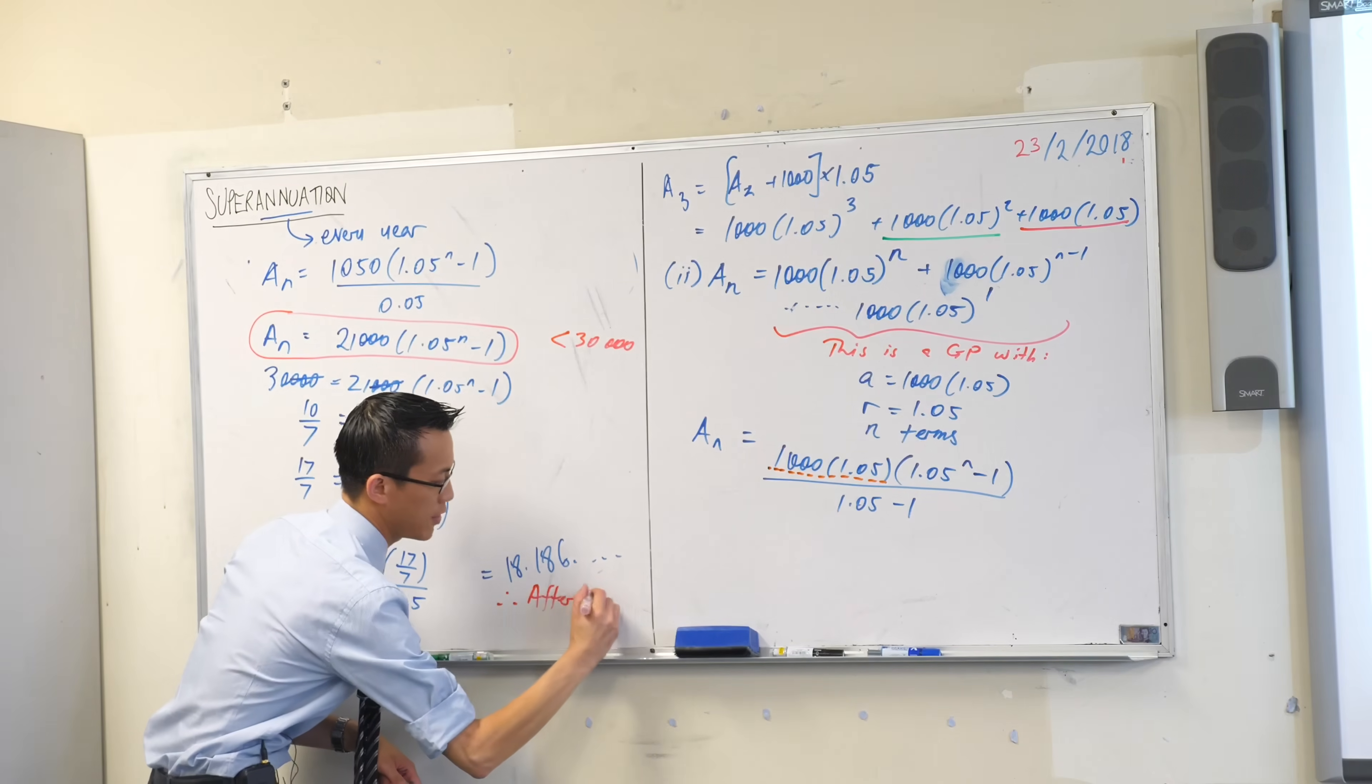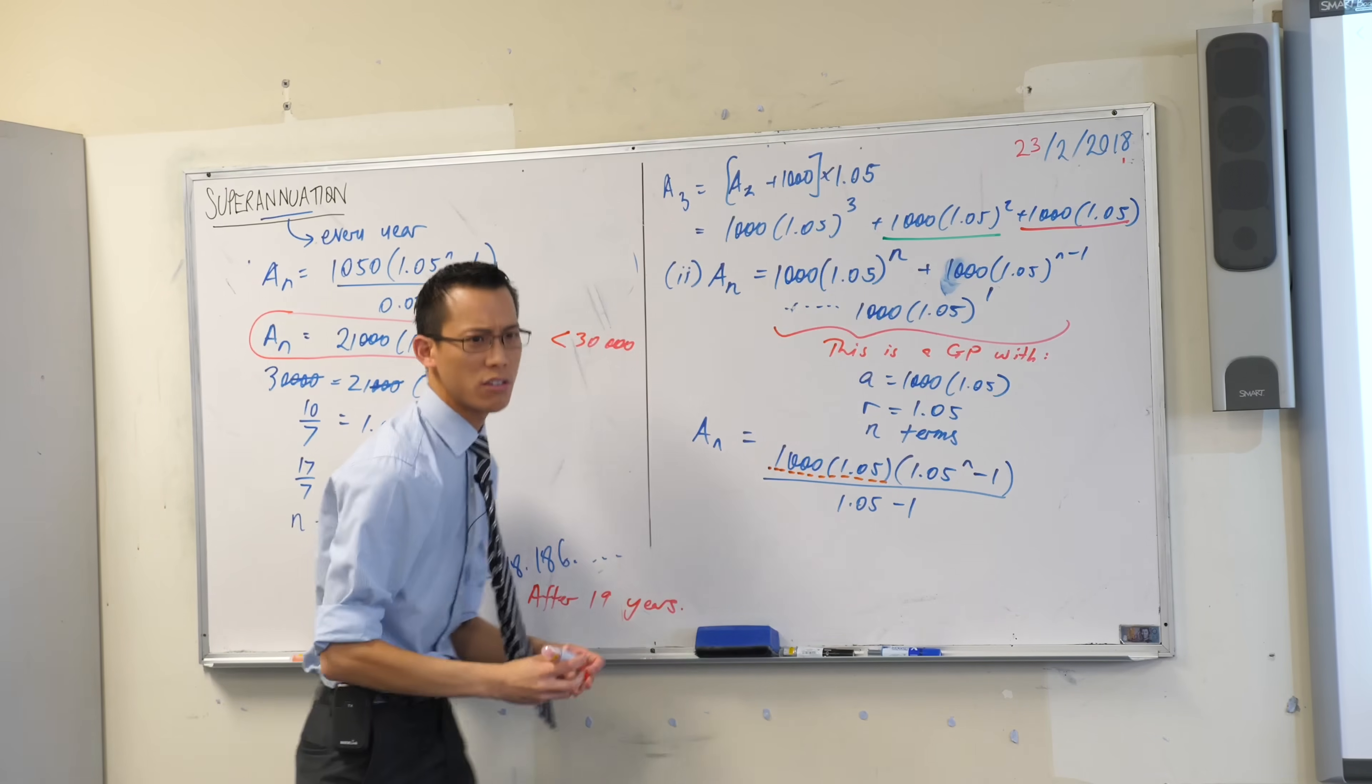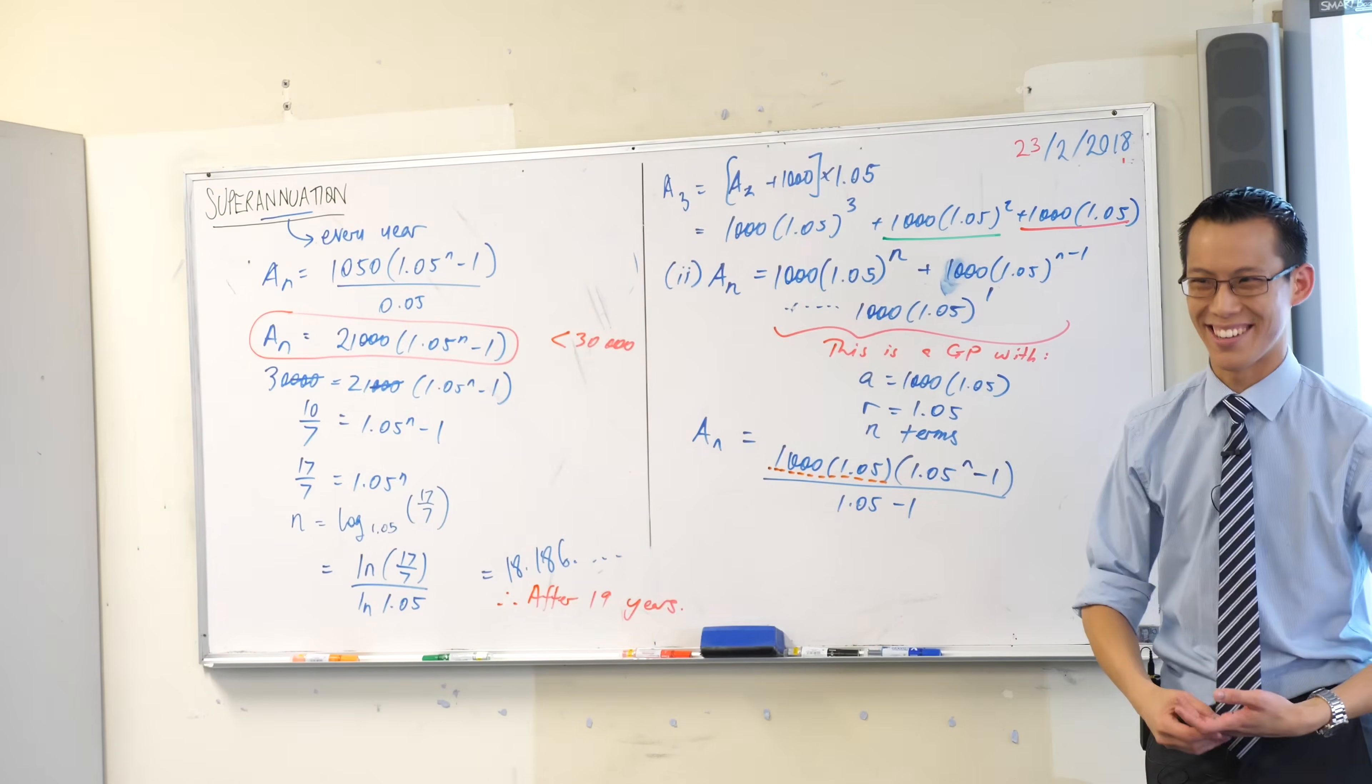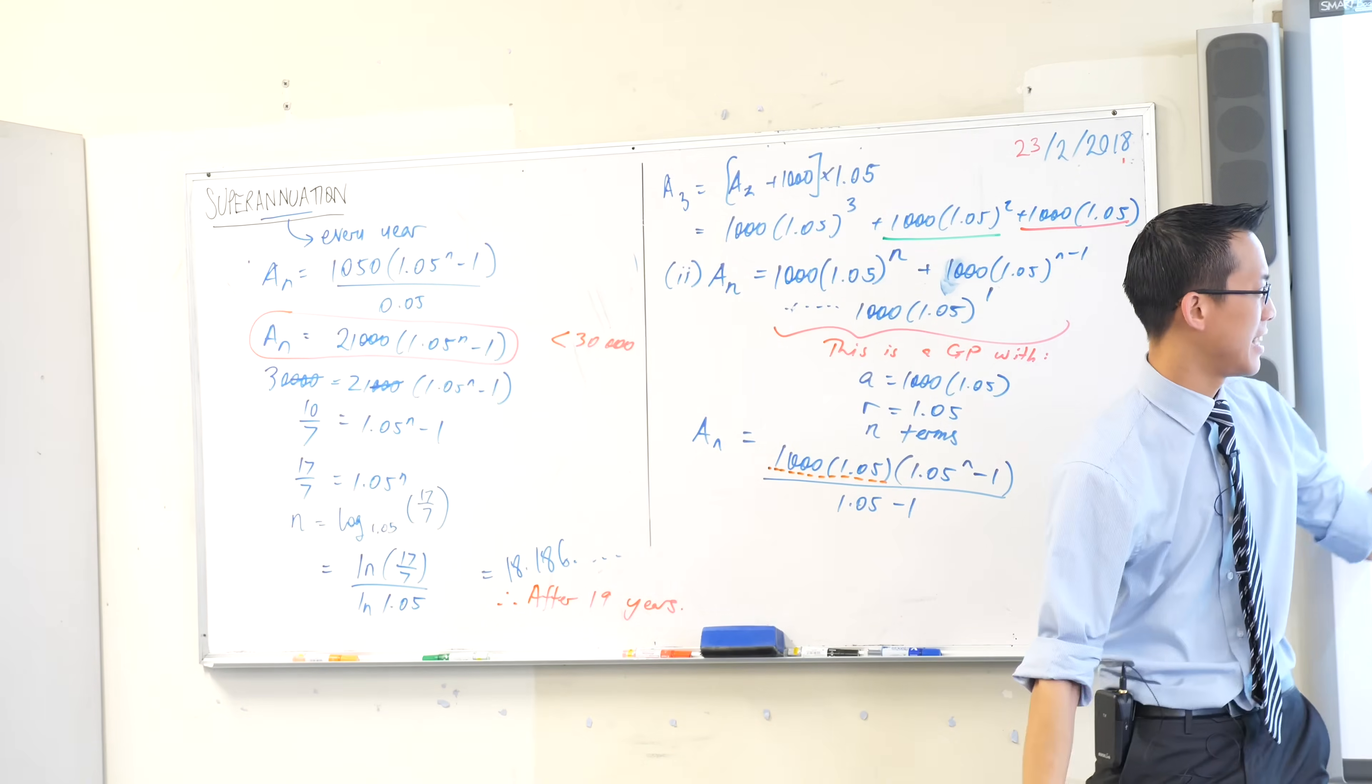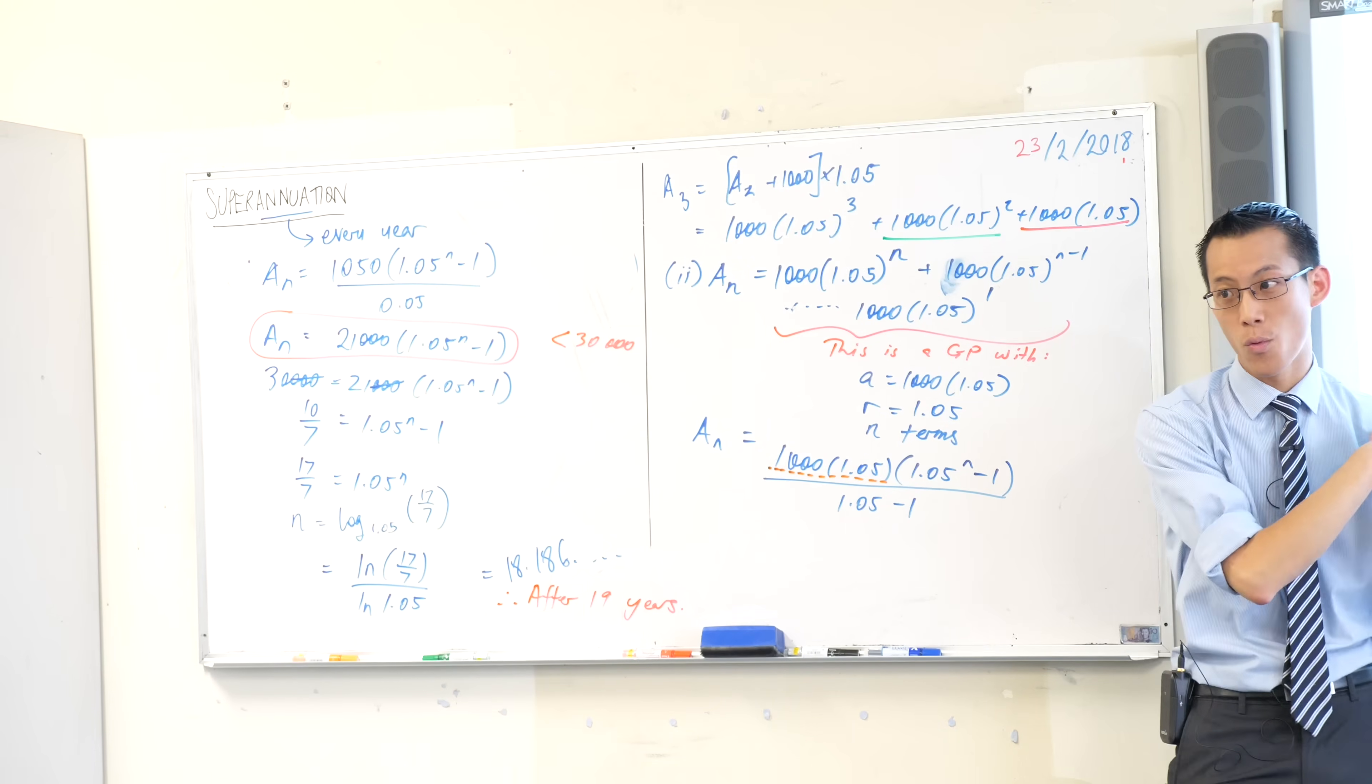I'm trying to make a big deal out of this because this is not rounding. You're not rounding. Since when did 18.18 round up to 19? But you're interpreting the question and you're recognizing, what do I do with this number to get the actual answer that I want?